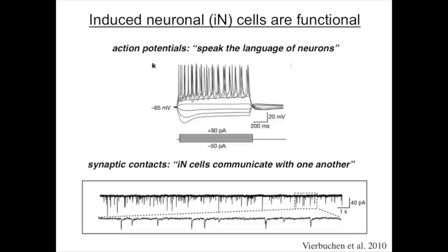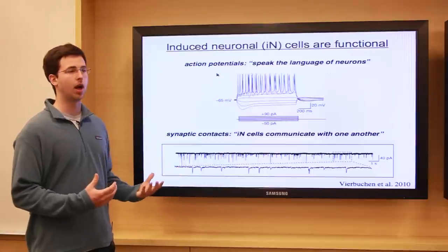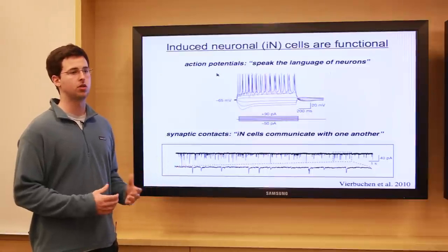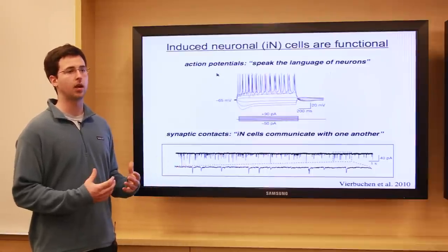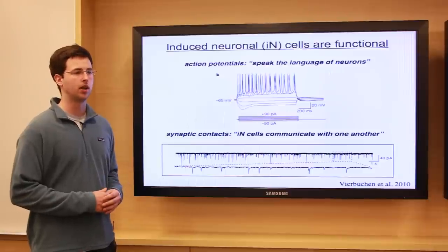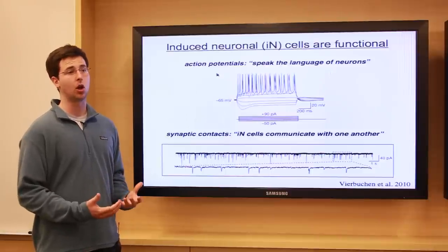We were convinced that these cells behave like neurons functionally and express all the right neuronal proteins. So we thought we could potentially use these cells to look at neurological disorders and possibly model those diseases in culture.